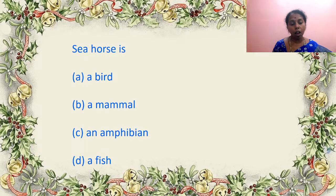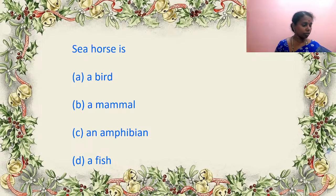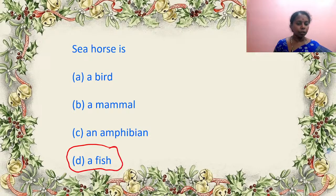What is a seahorse — is it a bird, a mammal, an amphibian, or a fish? The fish face will look like a horse, so it is represented as seahorse, but it is a fish only. The answer is D — very correct answer by Tarunika.